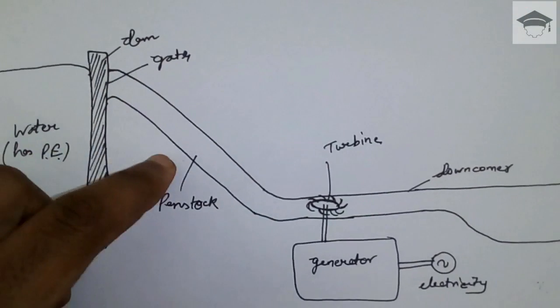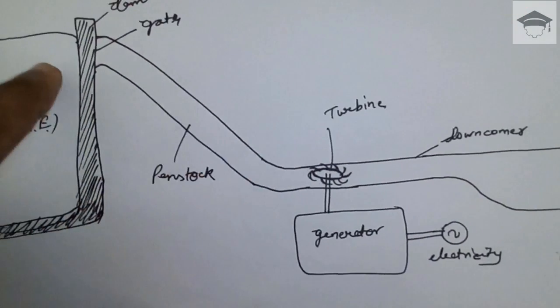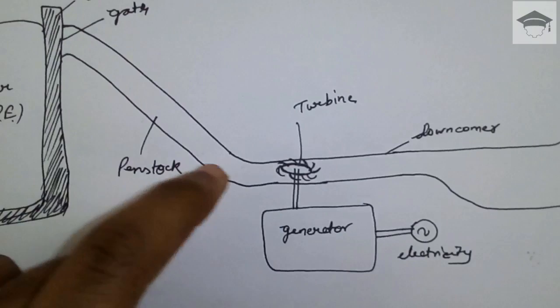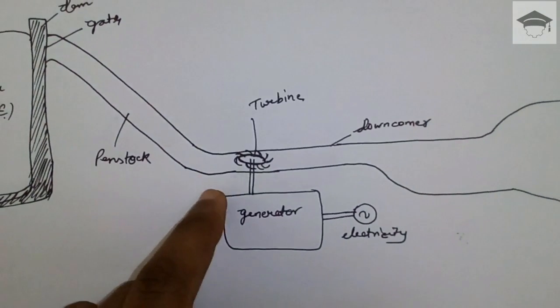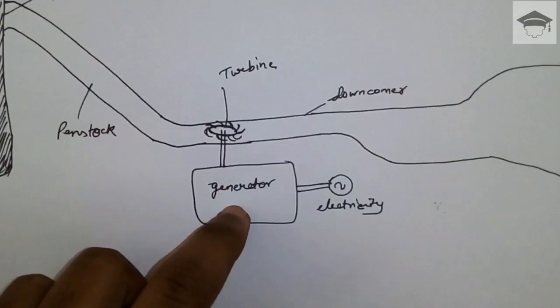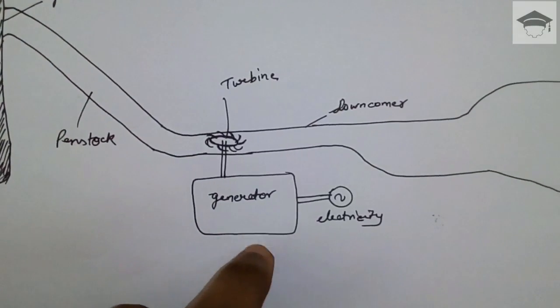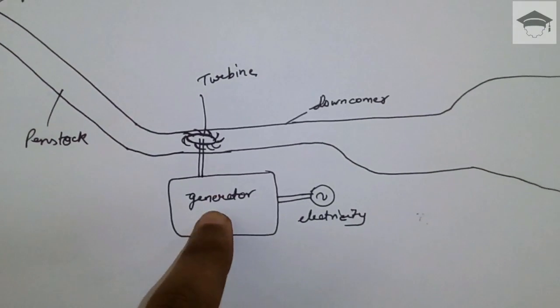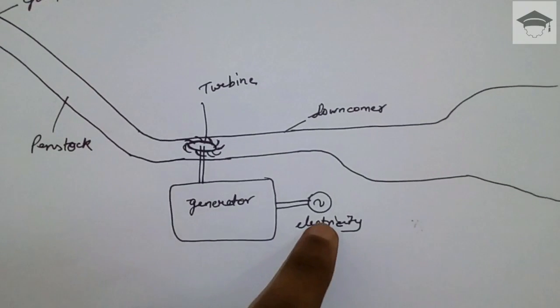The generator rotor rotates and then electricity is produced using Faraday's law. Then the water is passed to the downcomer, that is downstream, and this water is further used for irrigation and other purposes.